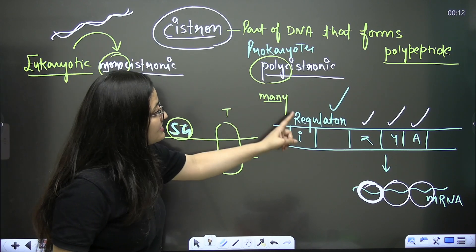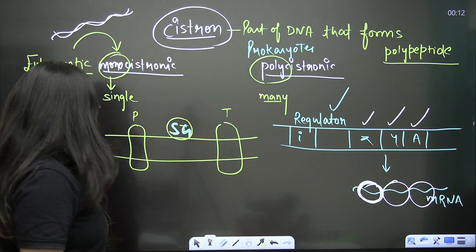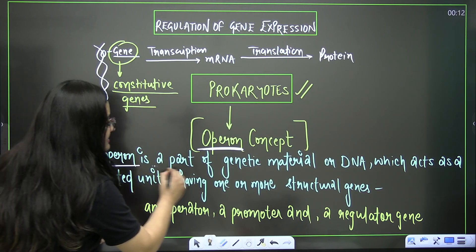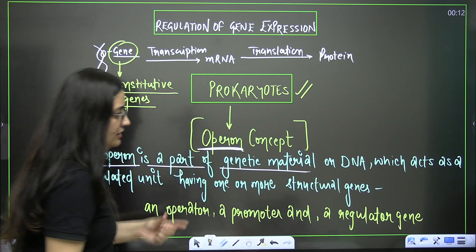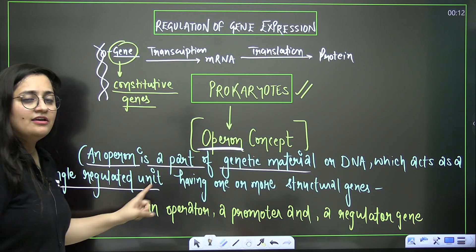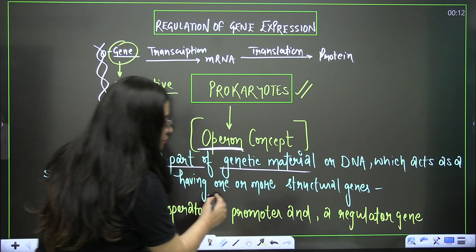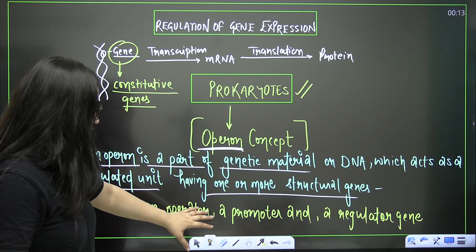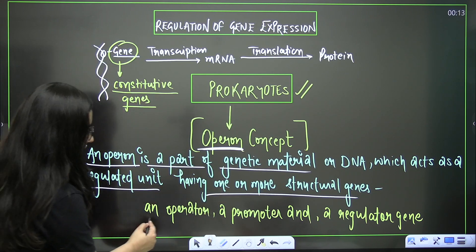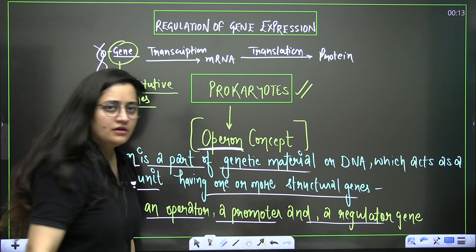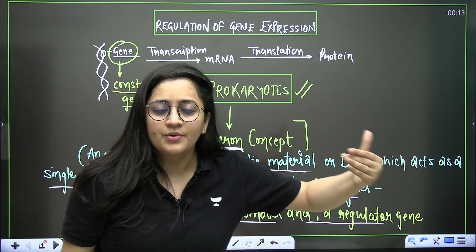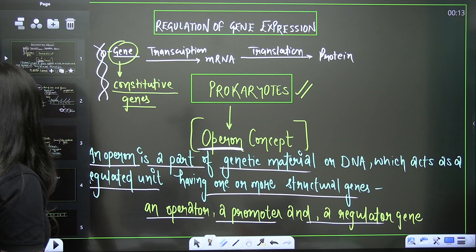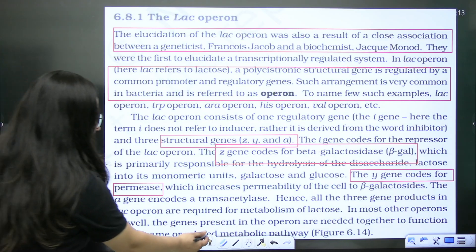The operon concept is only found in prokaryotes. An operon is a part of the genetic material or DNA that acts as a single regulated unit, having one or more structural genes, along with an operator, a promoter, and a regulatory gene.